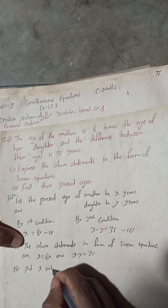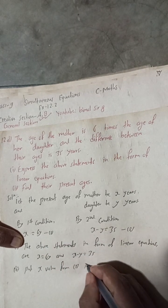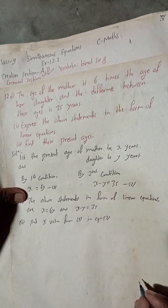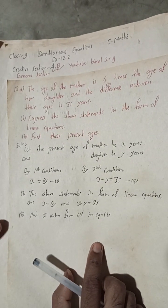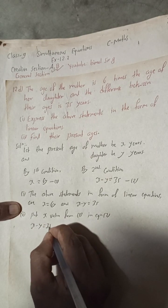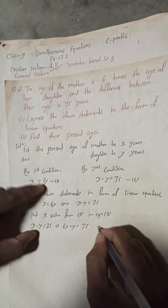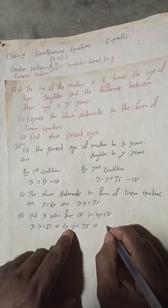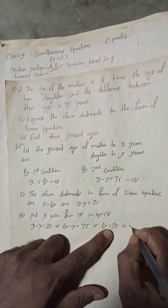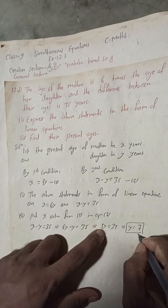Substituting x = 6y into Equation 2: x − y = 35 becomes 6y − y = 35. This implies 5y = 35, and therefore y = 35 ÷ 5 = 7.